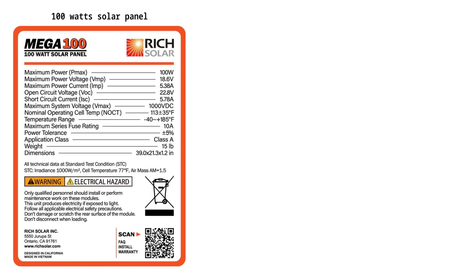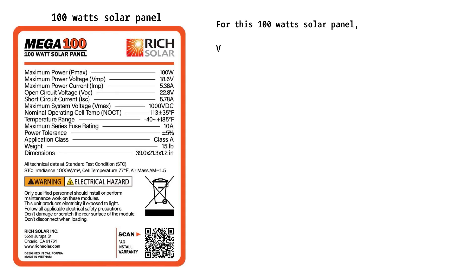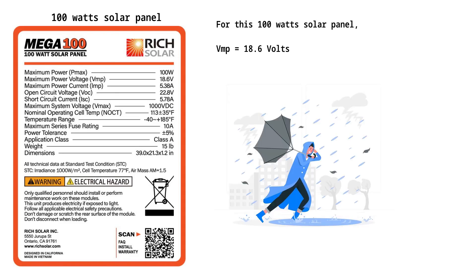From the solar panel's technical specification data, the 100-watt panel produces a maximum power voltage of 18.6 volts, meaning the solar panel can only output 18.6 volts at its best performance. This will be lower when the solar panel is not producing at maximum capacity due to weather conditions — the voltage may reduce to values between 15 and 17 volts when the weather is bad.